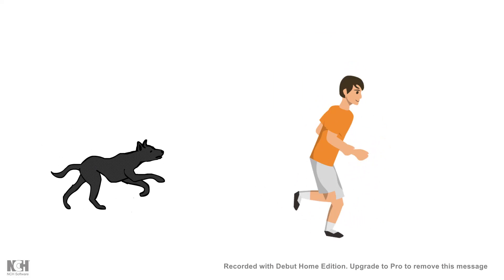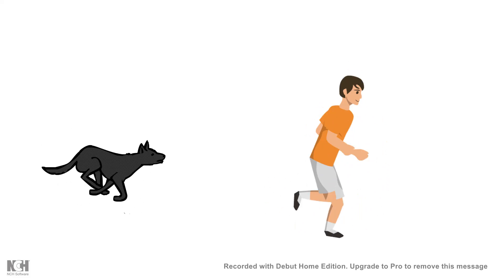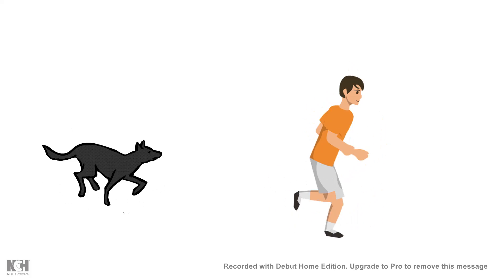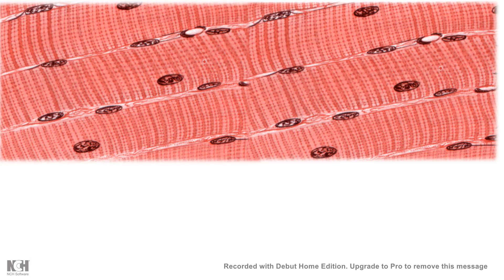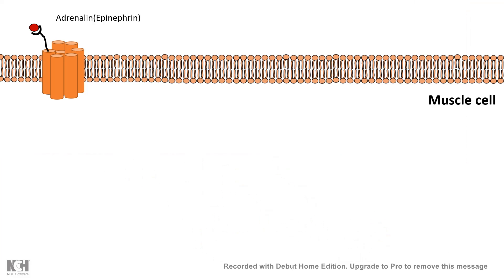Here is a real-life example. Imagine you are standing on a dog's tail and the dog is chasing you. Your muscles need to move immediately and require a large amount of glucose. After a while your muscle glucose is depleted, but you still need to run, so you need to break down glycogen in your muscle to produce glucose and power your muscles.